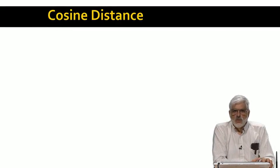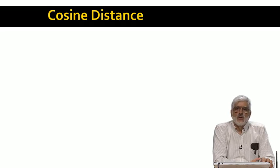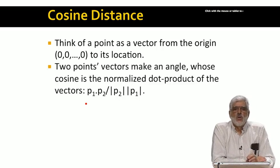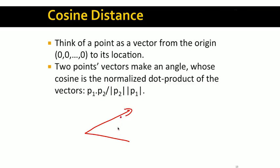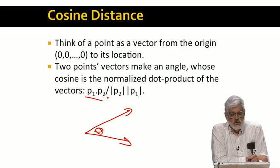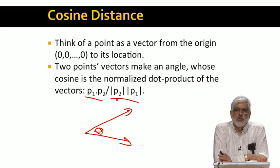Another important distance measure is the cosine distance, useful for data in the form of a vector — often in very high dimensions. For example, documents are often viewed as the vector of counts of each word appearing in the document, so each word is a dimension. To define the cosine distance, think of a data point as a vector from the origin in some space to the point in question. Any two points have an angle formed at their origin between their vectors, and we can compute the cosine of this angle from the components of the two vectors by taking the dot product and dividing by the lengths of the two vectors.